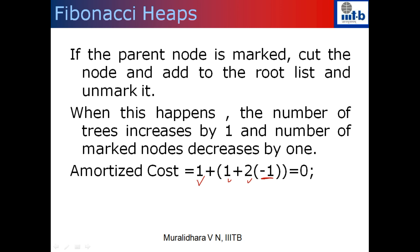In the case where the number of marked nodes increases, the potential increases slightly by one. In the second case — when you decrease the key, there is a heap property violation, and the parent is unmarked — you mark it and stop. The number of trees increases by one and the number of marked nodes also increases by one, so the change in potential is three and the actual cost is one, giving an amortized cost of four. But if you are doing multiple cuts of marked nodes added to the root list, you are decreasing the potential by one each time. So the entire amortized cost of the decrease-key operation in Fibonacci heap is O(1).